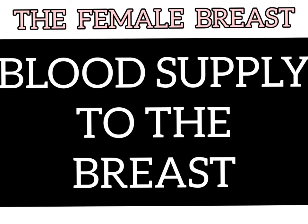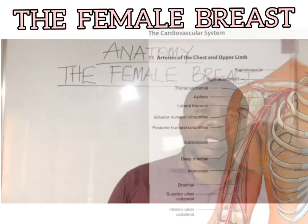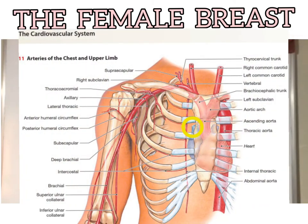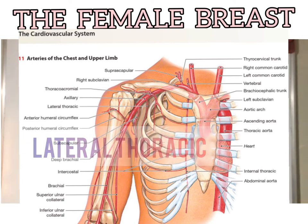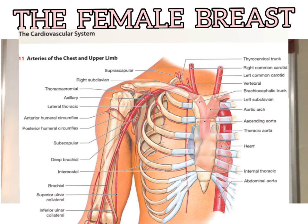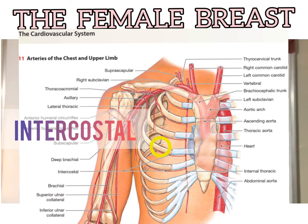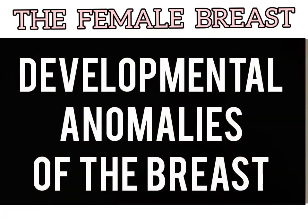The blood supply to the breast is principally from two sources: the internal thoracic artery, coming from the first part of the subclavian, and the lateral thoracic artery, coming from the second part of the axillary artery. You also have the thoracoacromial artery, also from the second part of the axillary artery. And finally, there is a branch from the internal thoracic called the intercostal artery.